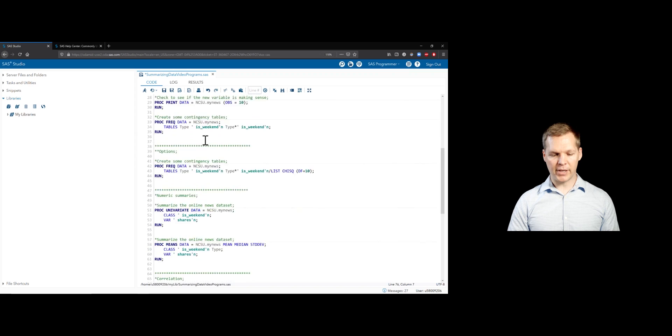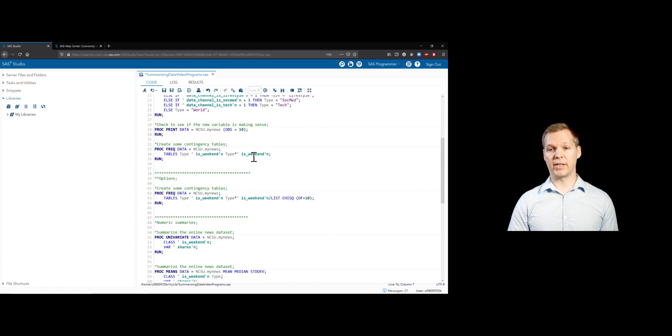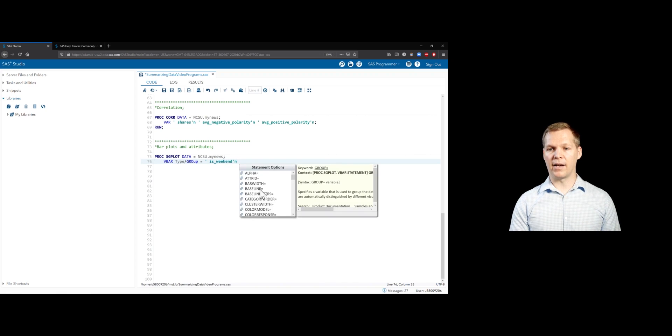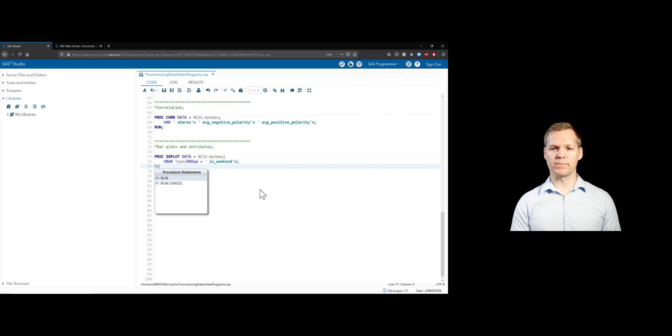We're going to use vertical bar plots just like we did before. And we created a two-way table up here between type and is weekend. Let's go ahead and just recreate that in bar plot form. So we'll do type, and then slash. We'll do our group being... Sorry, SAS is not case sensitive, so it doesn't matter about my inability to type here. We'll do is weekend. Again, we've got to use this weird way of specifying these variable names. Let's just go ahead and run that and see what it looks like to start.